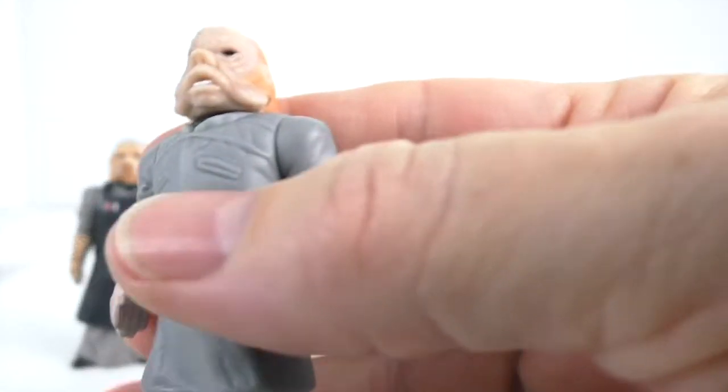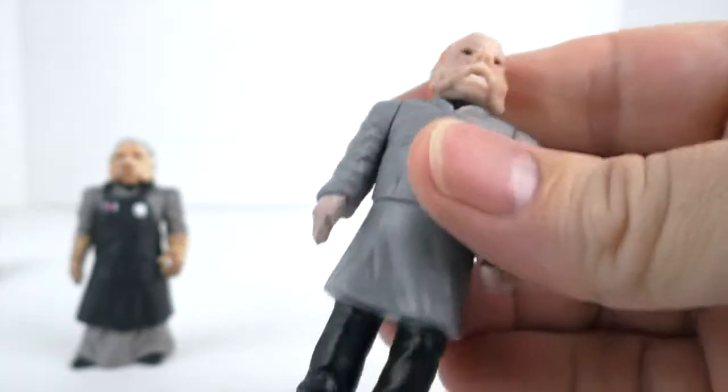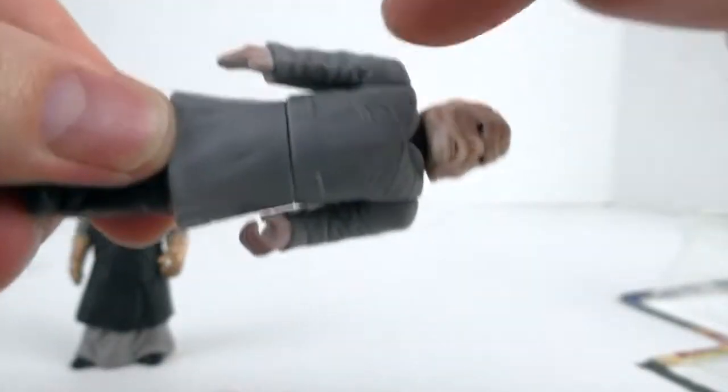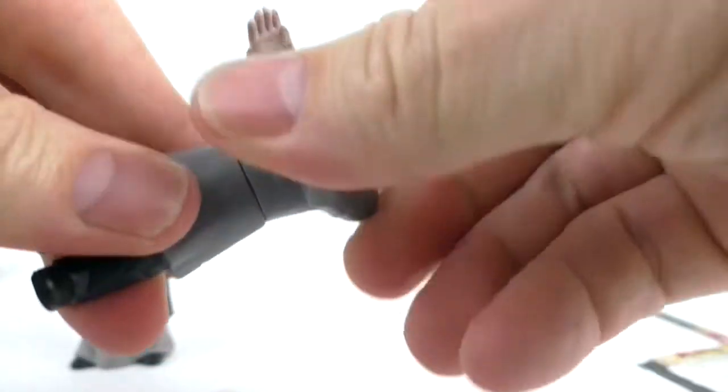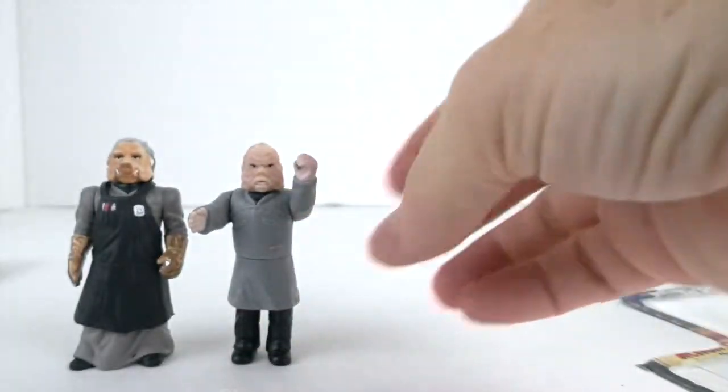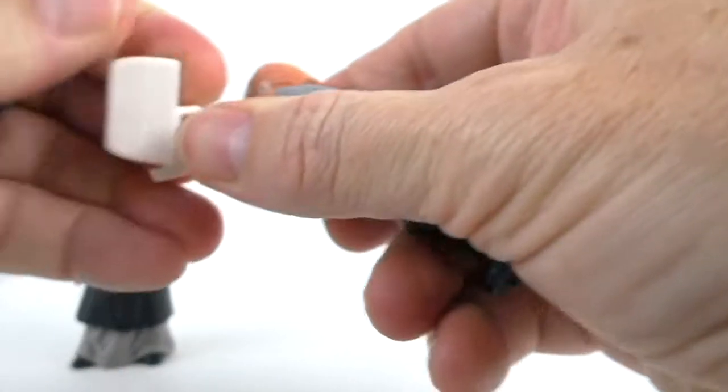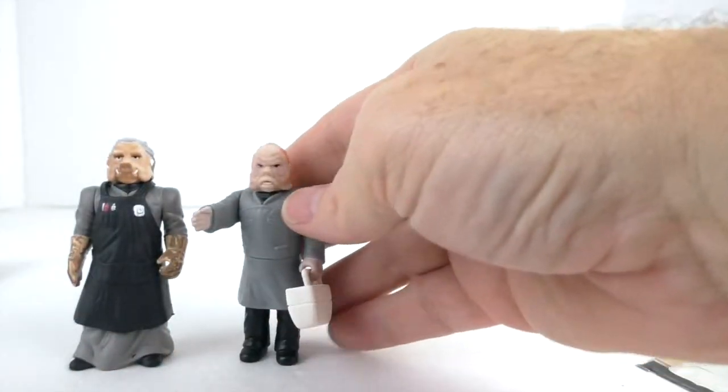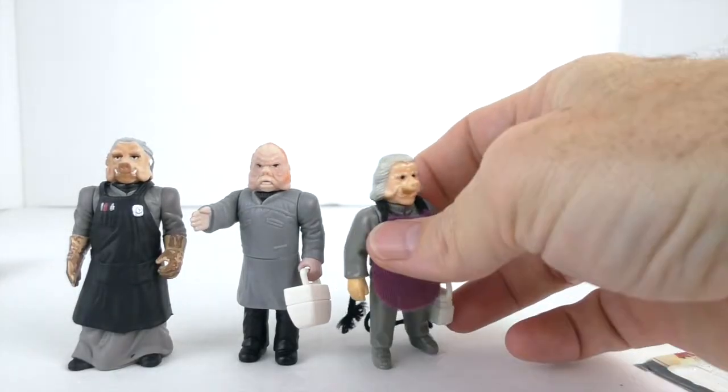A lot more detail on this Ugnaught than the original, of course. It stands well. And here's the other one, a different looking Ugnaught. This one also, the legs don't move. You have one, two, three, four - four modes of articulation: the arms.